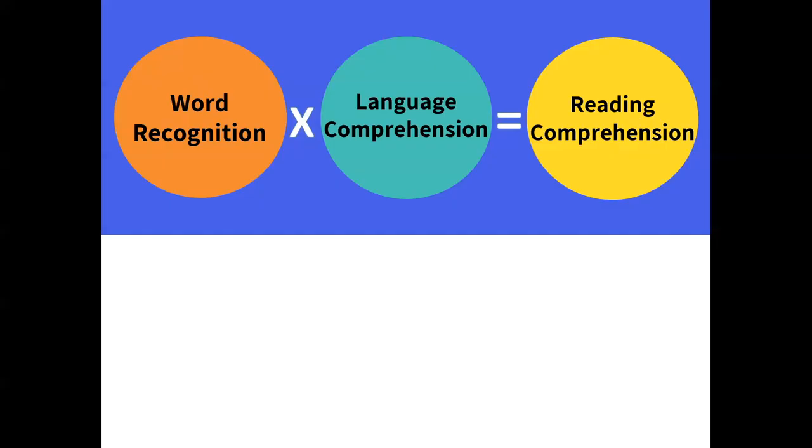It's important to note that the simple view of reading is framed as a multiplication equation with reading comprehension as the product. When we look at the equation, we can see that word recognition times language comprehension equals reading comprehension. This illustrates the point that we cannot start with teaching reading comprehension. Instead, we need to focus on those two components: building automatic word recognition as well as strong oral language skills. Let's take a look at some pretend students with varying levels of strengths and weaknesses in these two components.